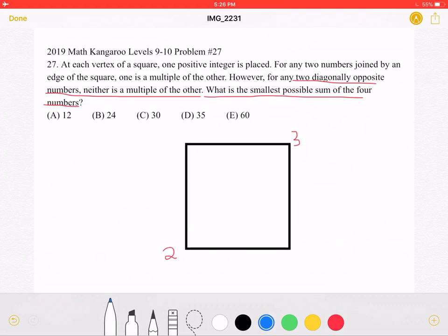The problem states that for any two numbers joined by an edge of the square, one is the multiple of the other. So that means that this corner must be a multiple of 6 because it must be a multiple of 2 and a multiple of 3. The same is true for the number that goes in this corner. It must also be a multiple of 6.